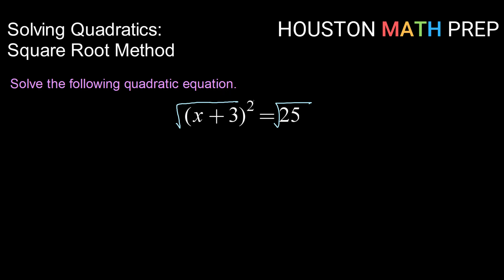So square undoes square root and I get x plus 3 equals, anytime I take the square root of both sides, I have to consider positive and negative. So positive and negative square root of 25 makes positive and negative 5.